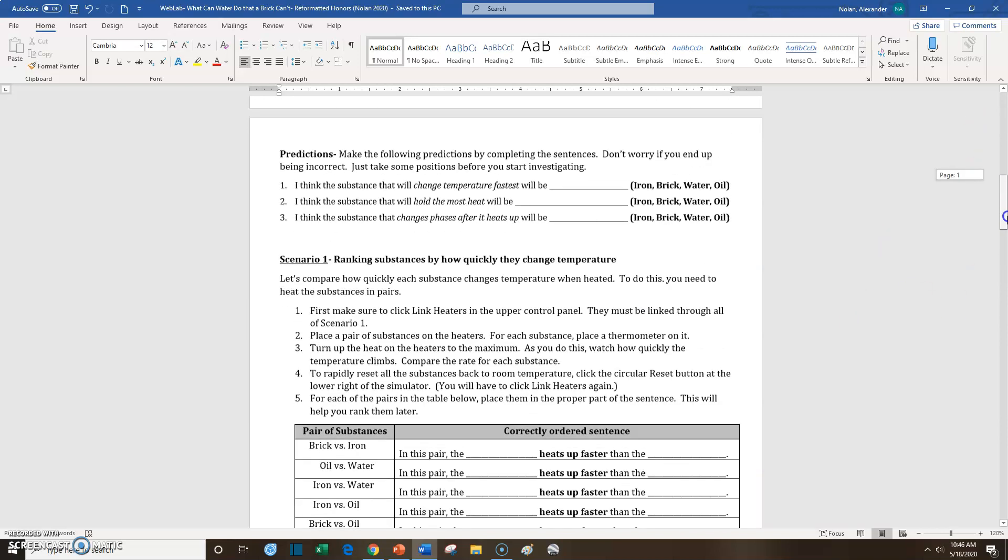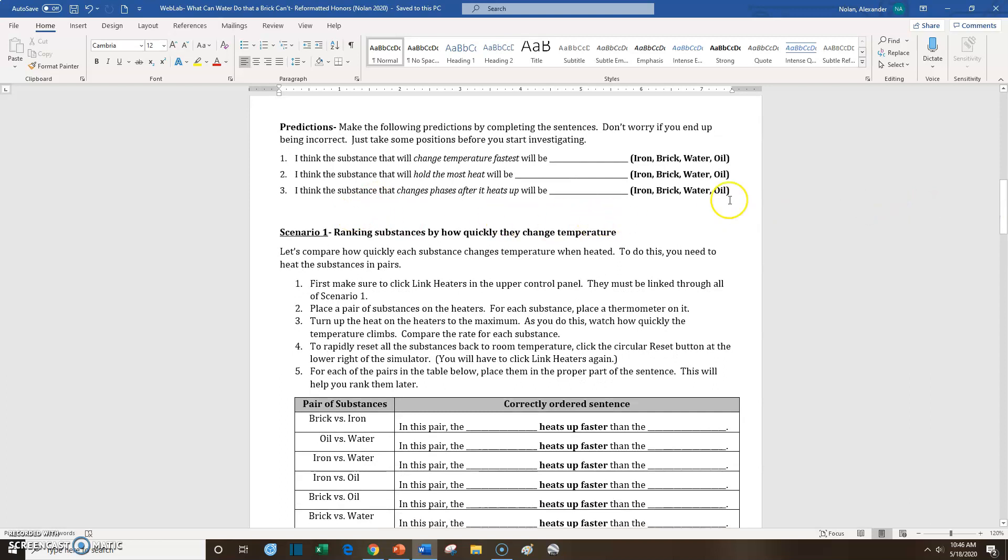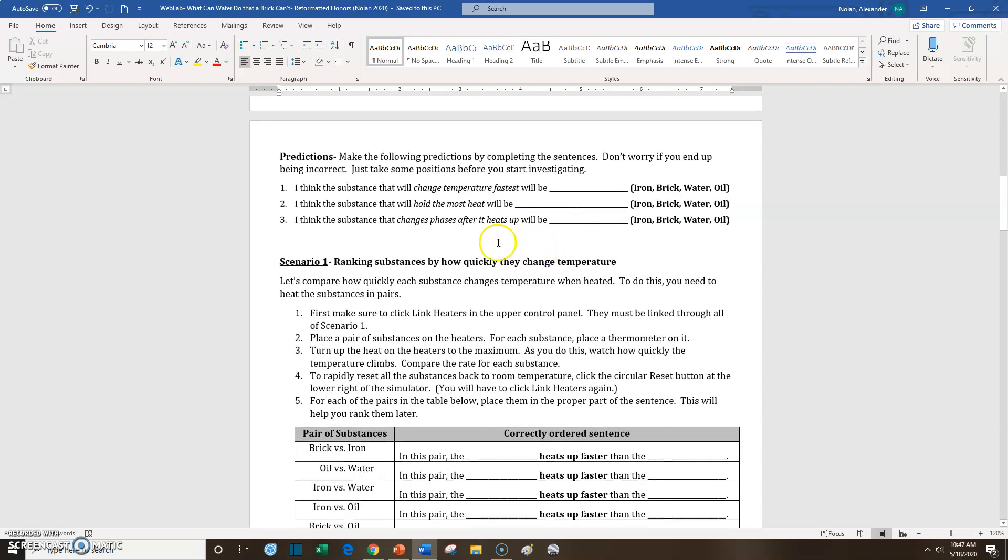So in this document, what you're going to do is you'll make some predictions about what different substances will do. So, which substance, iron, brick, water, or oil, will change temperature fastest? Which substance will hold the most heat? Which substance will change phases after it heats up? So before you go any further here, go ahead and pause the video. Go ahead and finish these statements as far as your predictions.